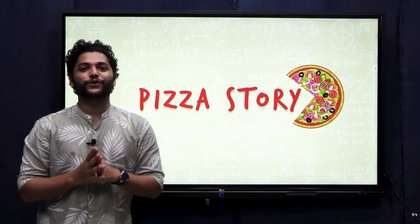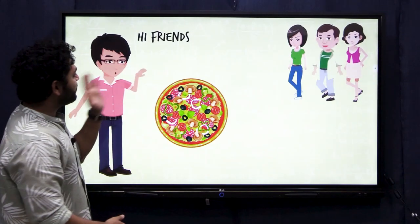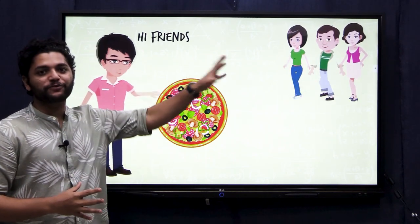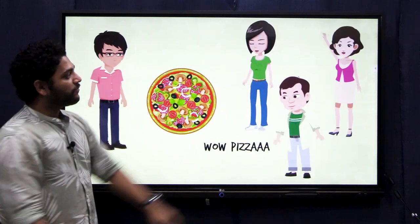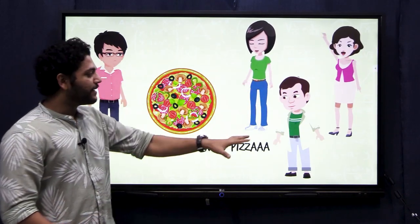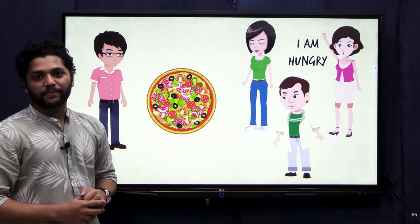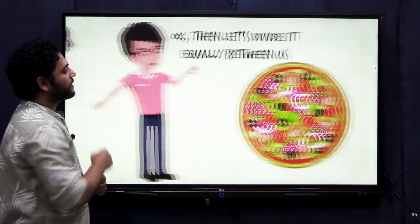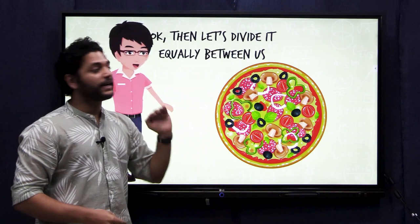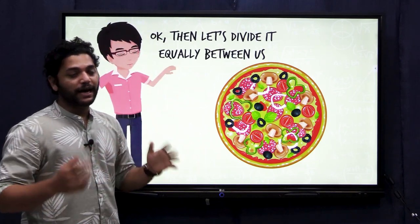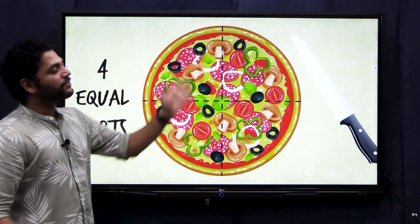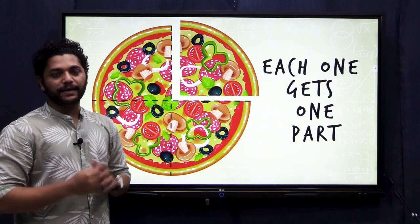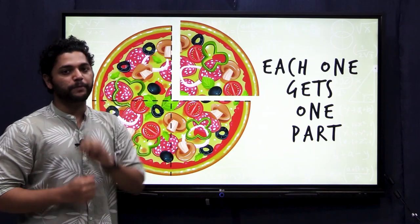Now there is a pizza story. There is a guy who is deciding to have pizza, but after some time he sees that three of his friends walk towards him. They all together see the pizza and decide what shall they do. The guy decides to divide the pizza equally into four equal parts by cutting it with a knife. Each one gets one part — they divided it into four equal parts because there are four people.